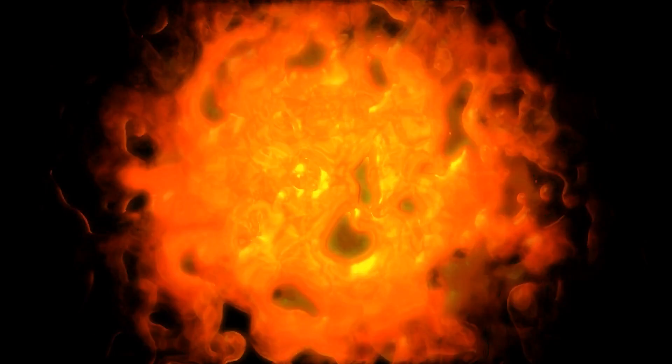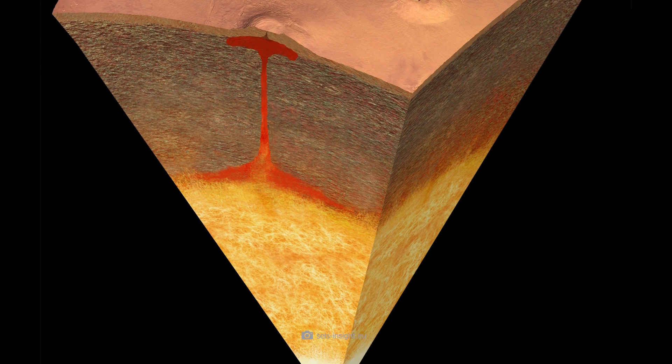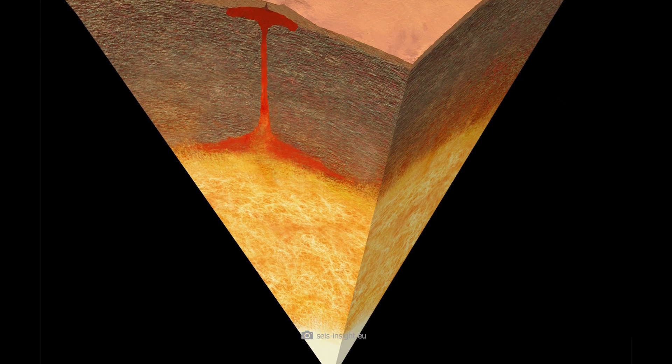But the findings go much further. Thanks to the new data, scientists were able to analyze the elements inside in great detail for the first time. It turned out that the core of Mars has a high proportion of lighter elements.